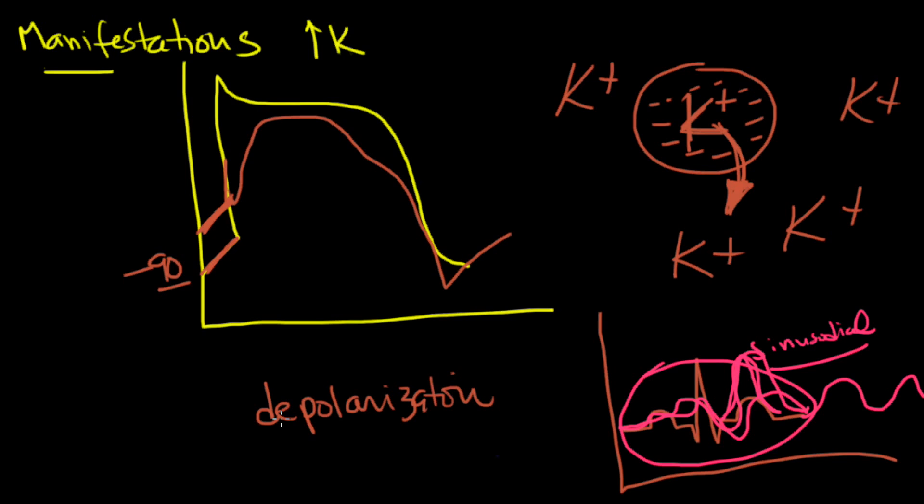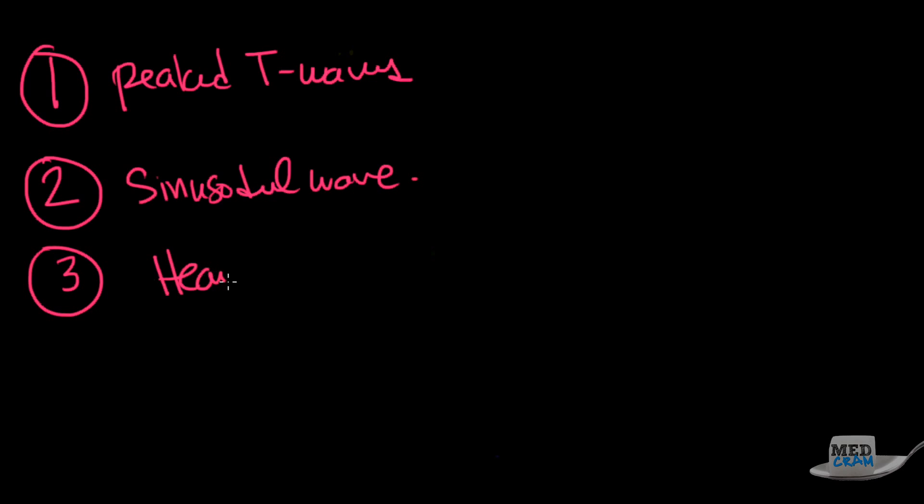What should you know about manifestations? You will have depolarization due to low potassium conductance, and then hyperpolarization due to inactivated sodium channels. You'll have reduced phase zero velocity and decreased membrane excitability. Then you'll get increased potassium conductance and accelerated repolarization. The key points are: number one, peaked T waves is the first sign you'll see. Number two, if it gets high enough, you'll get this sinusoidal wave. And number three, hyperkalemia in general is going to affect the heart. All of this is an emergency.